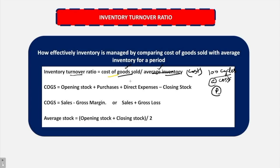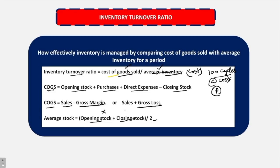In case cost of goods sold is not given, we assume that COGS is equal to sales. Cost of goods sold can be calculated by: opening stock plus purchases plus direct expenses minus closing stock. It can also be calculated by reducing gross margin from sales, or by adding gross loss. Average stock is opening stock plus closing stock divided by 2 — that is the average distribution of stock in the entire year. If opening stock or closing stock is not given, we take the remaining figure to be the average stock without dividing by 2.